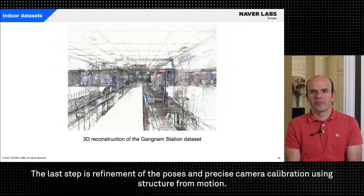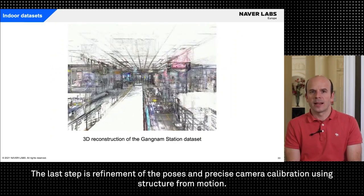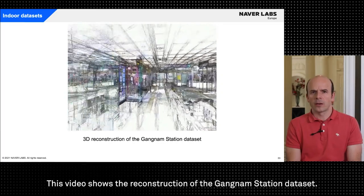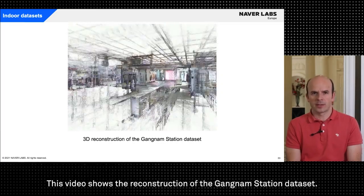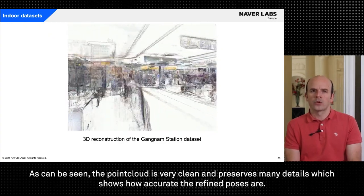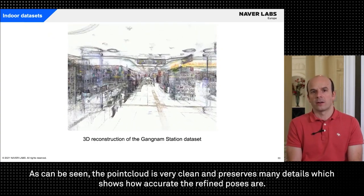The last step is refinement of the poses and precise camera calibration using structure from motion. This video shows the reconstruction of the Gangnam station dataset. As can be seen the point cloud is very clean and preserves many details which shows how accurate the refined poses are.